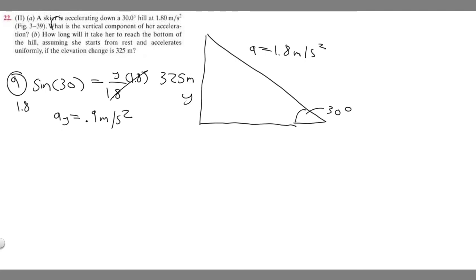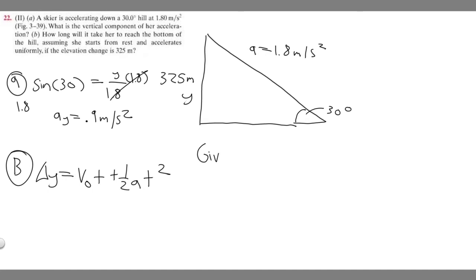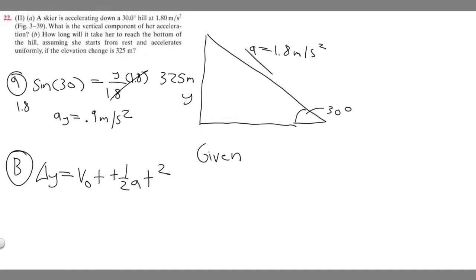So that's Part A — the vertical component is 0.9 m/s². Now let's find Part B: how long will it take her to reach the bottom of the hill? We're going to use a kinematic equation — specifically: delta Y equals V-sub-0 times T plus one-half A times T squared. This may look daunting, but let's just identify what we're given. We're focused on the vertical direction.